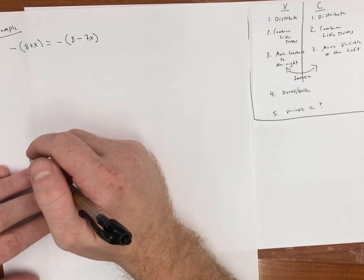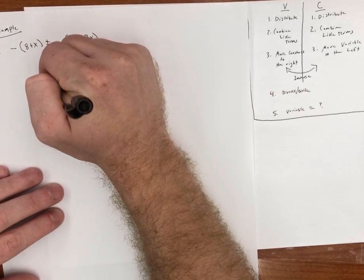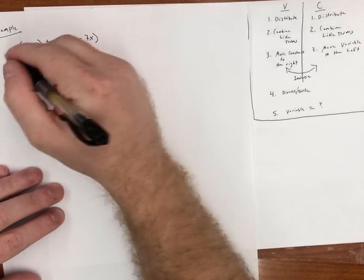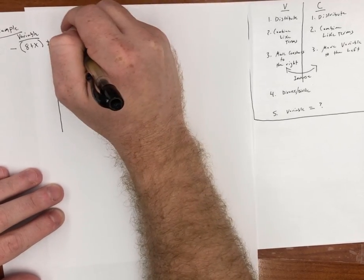Okay, hopefully you tried this on your own. So again, the first thing I'm going to do is draw my river. I'm going to now label my sides. I have the variable side, and I have my constant side.